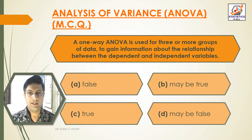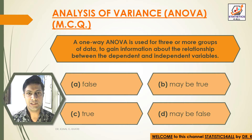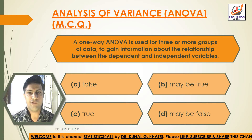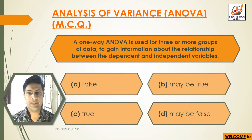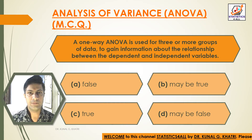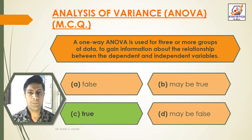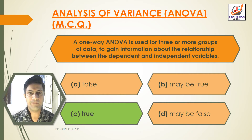Next question: A one-way ANOVA is used for three or more groups of data to gain information about the relationship between the dependent and independent variables. Option A: False. Option B: May be True. Option C: True. Option D: May be False. Answer: Option C, True. A one-way ANOVA is used for three or more groups of data to gain information about the relationships between the dependent and independent variables.